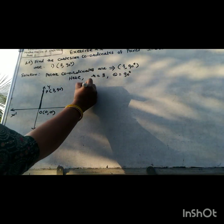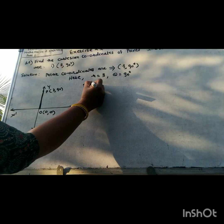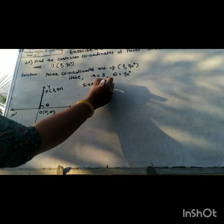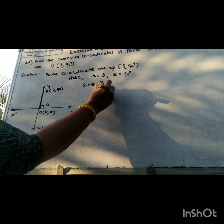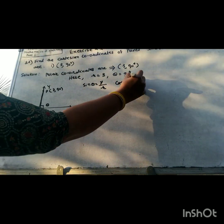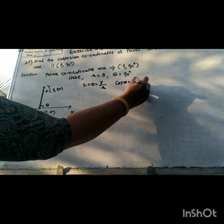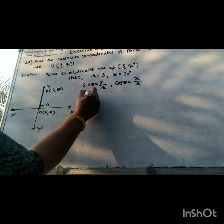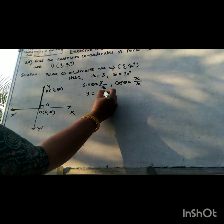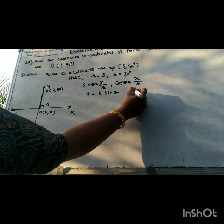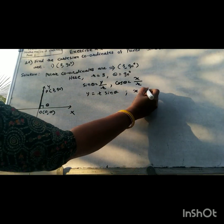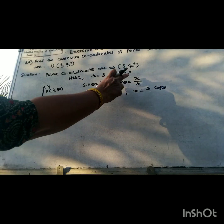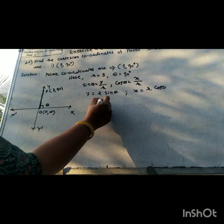We know that sin theta equals y divided by r, and cos theta equals x divided by r. Since r is 3, the y-coordinate is r times sin theta, and the x-coordinate is r times cos theta. Here theta is 90° and r is 3.